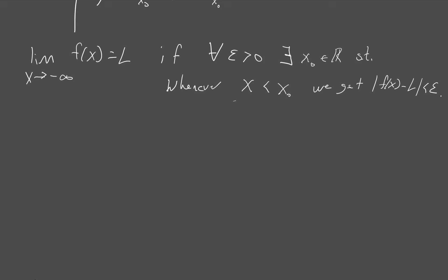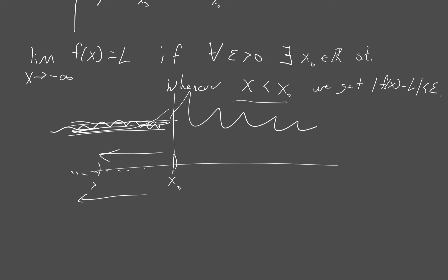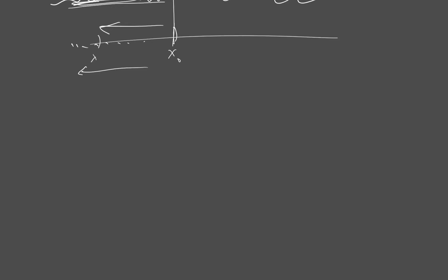So if I go far enough to the left, x-naught is on the x-axis here, and if I go over to some x to the left, I'm in this horizontal strip with that function as long as I'm to the left of x-naught. I will be in that strip forever, and I don't care what happens to the right of x-naught. To the left of x-naught I have to be in that strip, and if epsilon gets smaller, maybe I have to start further out to the left.